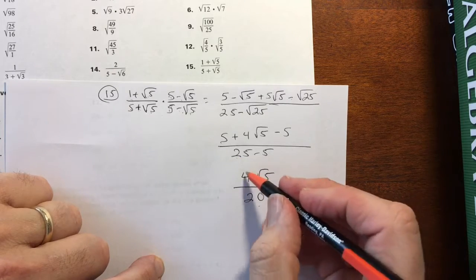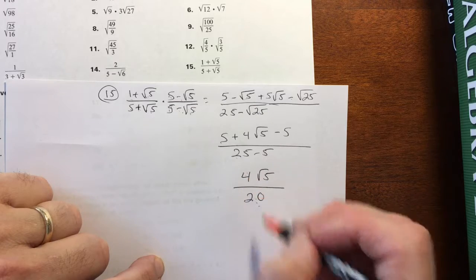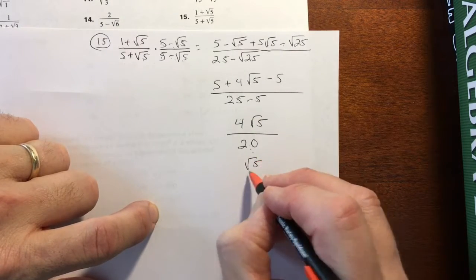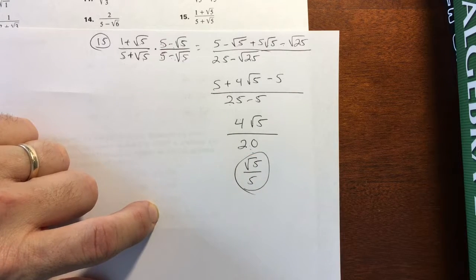Down bottom, 25 minus 5 is 20. Well, these two terms can simplify further, the 4 and the 20. I can divide both of these by 4. My answer will then be square root of 5 over 5. Now there's your answer for number 15.